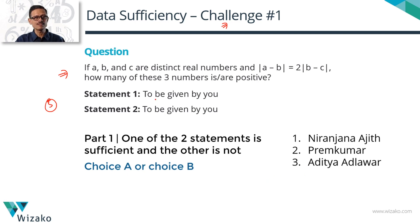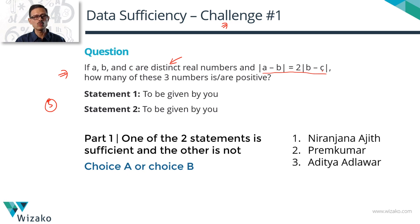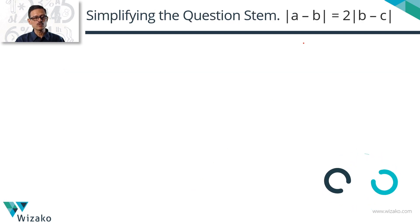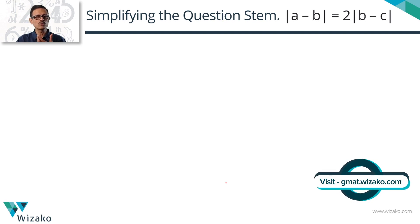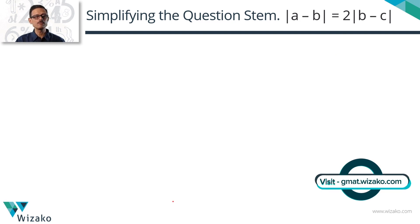Before we get started, let's get clarity on the question stem. It says three numbers are distinct real numbers — A is not equal to B is not equal to C. The second part says modulus of A minus B equals two times modulus of B minus C. Getting a good understanding of this is crucial. Modulus of A minus B tells us the difference between A and B — it doesn't matter which is larger.